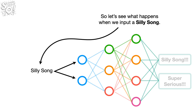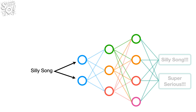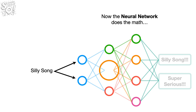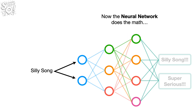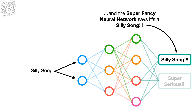So let's see what happens when we input a silly song. It's a super duper silly song! Hooray! Now the neural network does the math — beep, boop, beep, beep, beep, boop — and the super fancy neural network says it's a silly song.